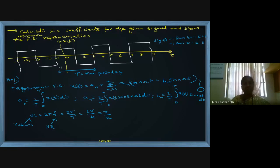Equation one is: x(t) = a₀ + summation of aₙ cos(nω₀t) + bₙ sin(nωt). We calculate a₀, aₙ, and bₙ using their respective formulas. Wherever omega appears, it is 2πf, and since the time period from the diagram is 4 units (positive half-cycle plus negative half-cycle), omega equals π/2.